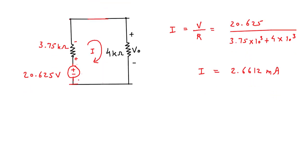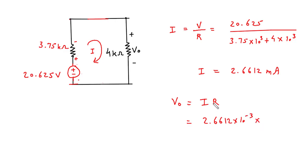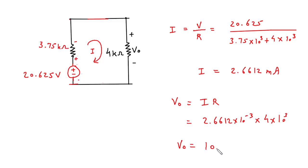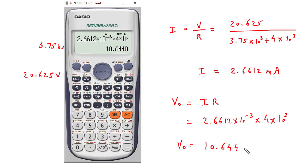Now we can find the value of VO. VO = I × R: the value of current I is 2.6612 × 10⁻³ and the resistance R is 4 kilo ohm = 4 × 10³. Therefore VO = 2.6612 × 10⁻³ × 4 × 10³ = 10.6448 V.